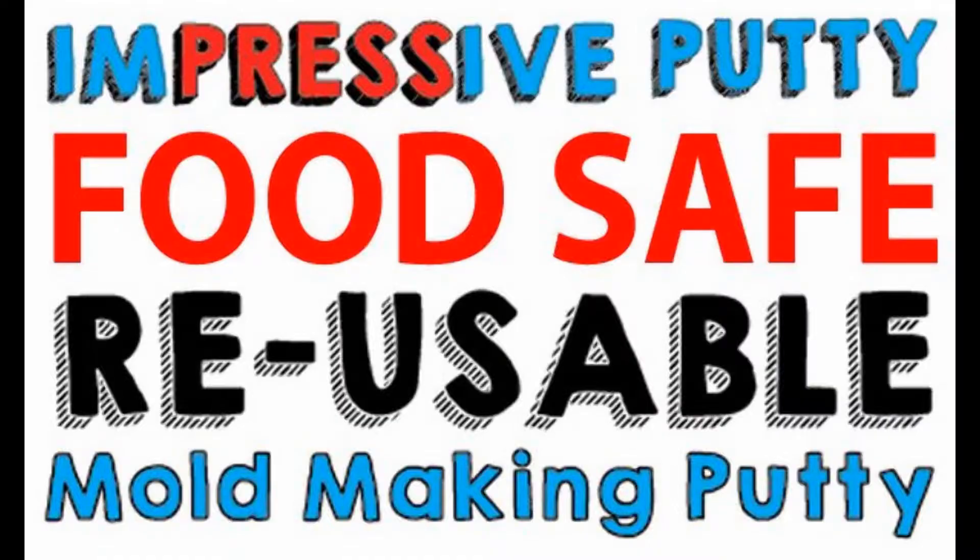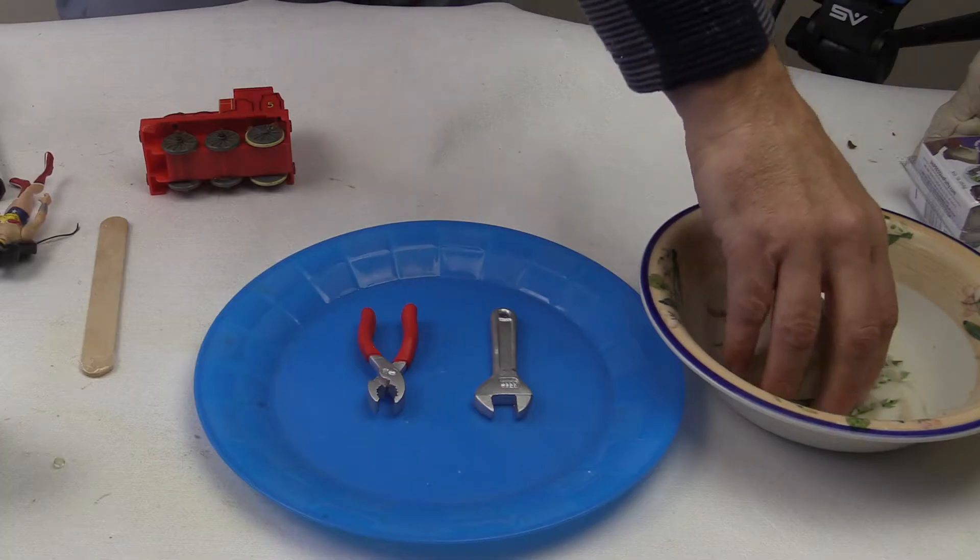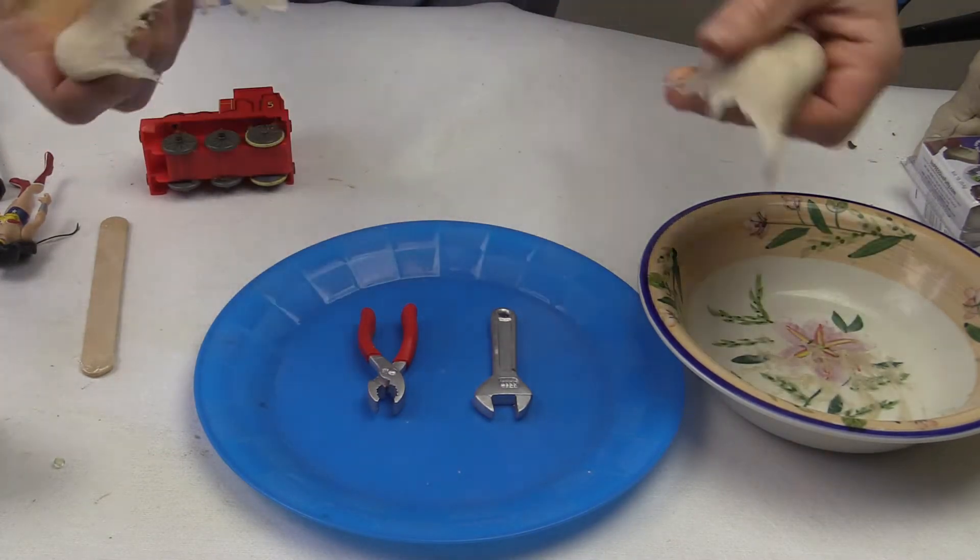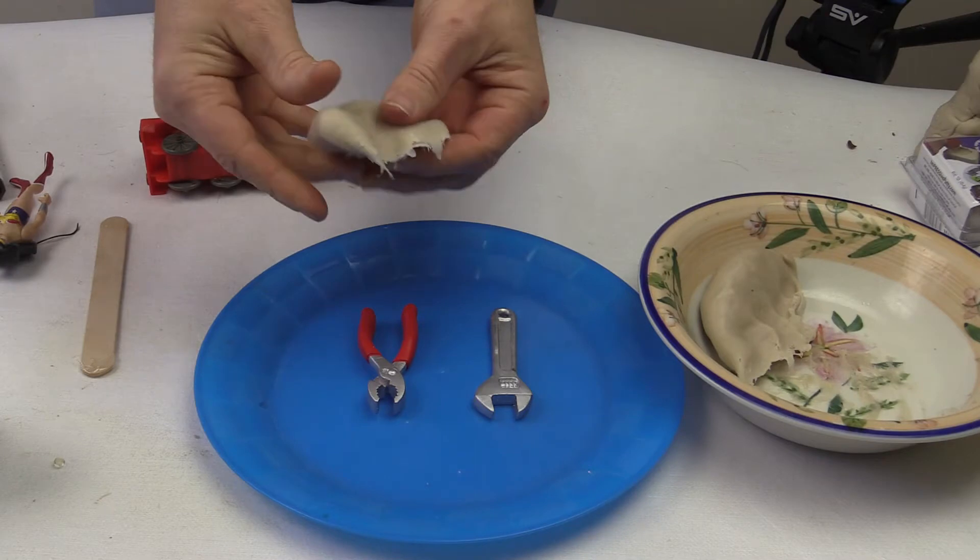How to make your own isomold and hot sugar molds with a food safe reusable molding putty. Start with the shapes that you want to make into sugar or isomold candies. Clean these shapes well.